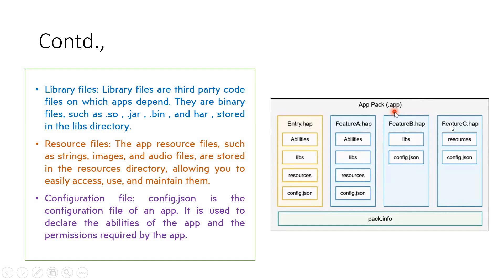We also have something called resource files, which are very important. App resource files can be strings, images, or audio files — they all come under this category and are stored in the resources directory, where you can easily access and manage them. The next very important item is the configuration file, which is the config.json file.